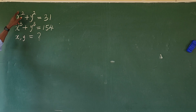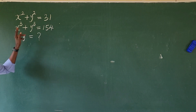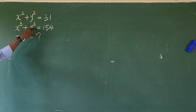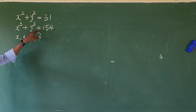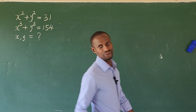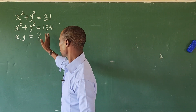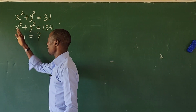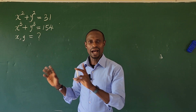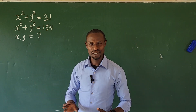So the question says: X² plus Y² equals 31, and X³ plus Y³ equals 154. What are the possible values of X and Y? In this question, you discover that the maximum degree is 3, so we have to get at least 3 pairs of values for X and Y that satisfy this set of simultaneous equations.